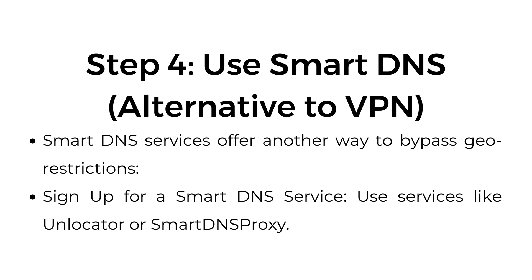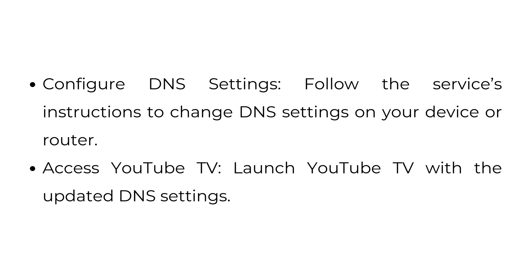Step number four: use smart DNS — an alternative to VPN. Smart DNS services offer another way to bypass geo-restrictions. Sign up for a service like Unlocator or Smart DNS Proxy. Follow the service's instructions to change DNS settings on your device or router, then launch YouTube TV with the updated DNS settings.